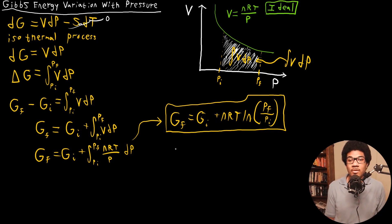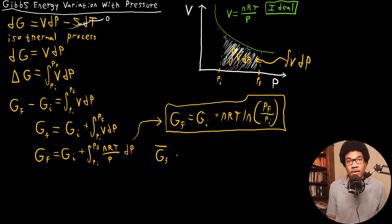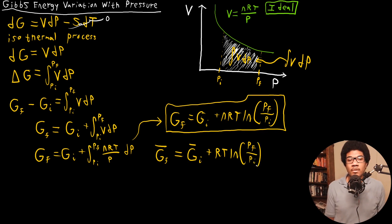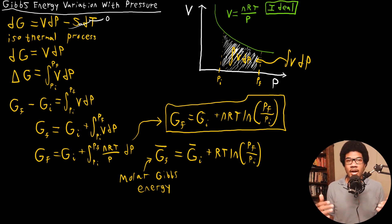Gibbs free energies are often expressed as molar quantities. For molar Gibbs energies, I denote the molar Gibbs free energy as Ḡ, just as we use V̄ for molar volume. So the final molar Gibbs energy equals the initial molar Gibbs energy plus RT ln(P_f / P_i) — essentially dividing both sides by n. This is the molar Gibbs energy expression. It's very important to see how it varies with pressure and temperature, especially since pressure and temperature are the natural variables for the Gibbs energy.